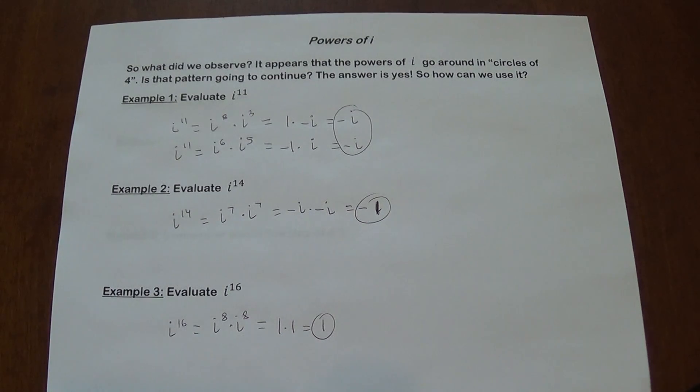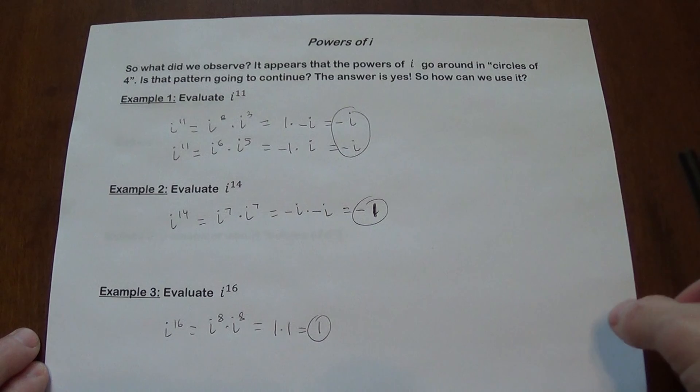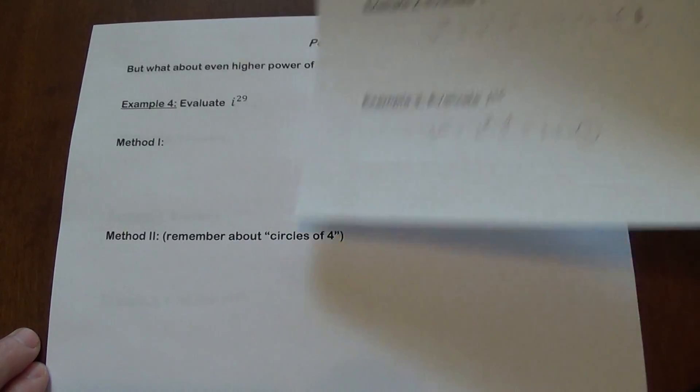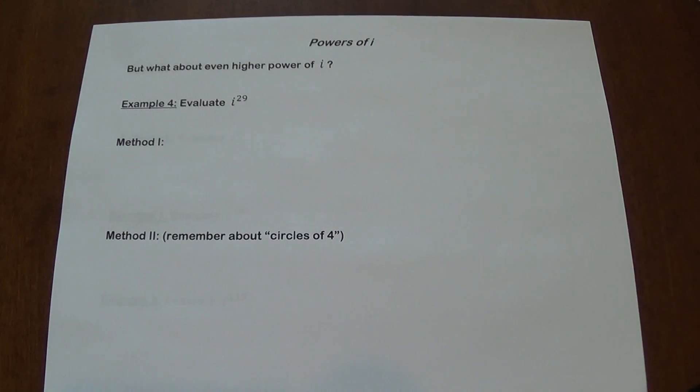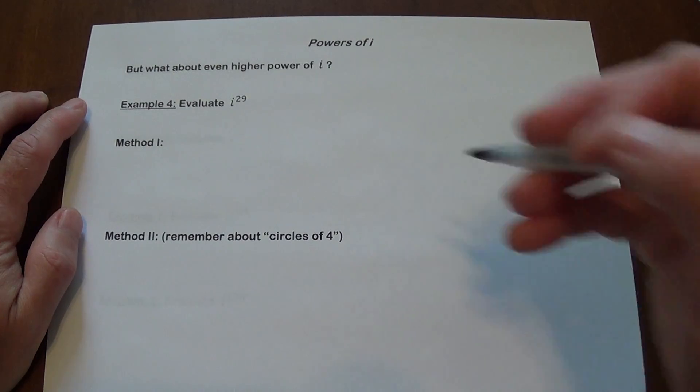But what happens is when we have to go to even higher powers? Because that seems like it works okay when you have somewhat of a lower exponent. What about higher powers? As long as we can break down 29, there are two methods we're going to look at. As long as you can break 29 into powers that are going to add up to 29, you're going to be fine.